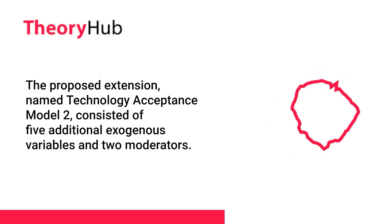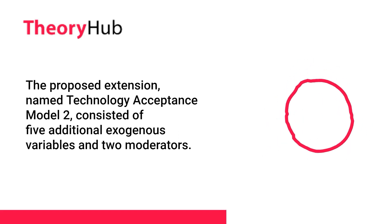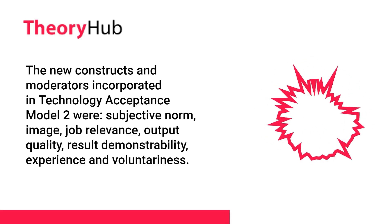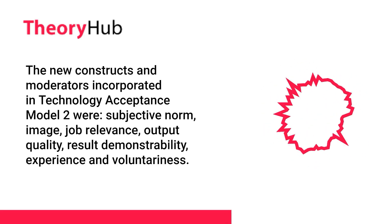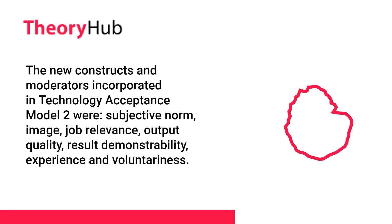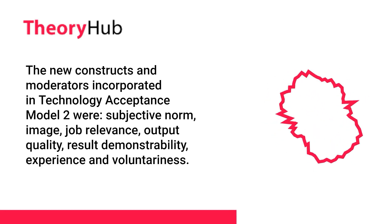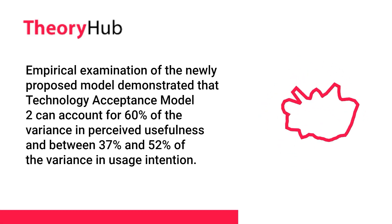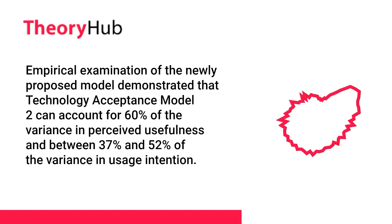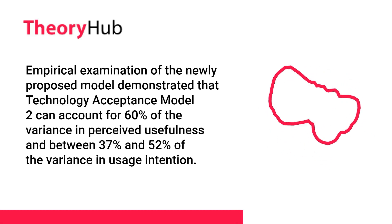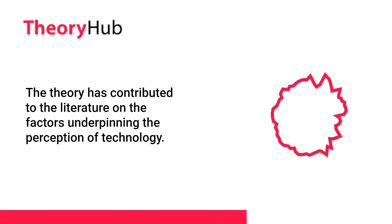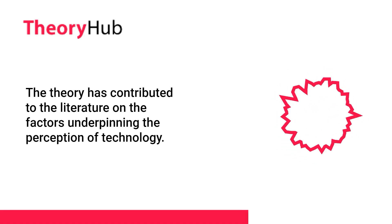The proposed extension, named Technology Acceptance Model 2, consisted of five additional exogenous variables and two moderators. The new constructs and moderators incorporated were subjective norm, image, job relevance, output quality, result demonstrability, experience, and involuntariness. Empirical examination of the newly proposed model demonstrated that Technology Acceptance Model 2 can account for 60% of the variance in perceived usefulness and between 37% and 52% of the variance in usage intention. The theory contributed to the literature on the factors underpinning the perception of technology.